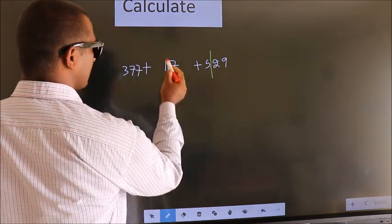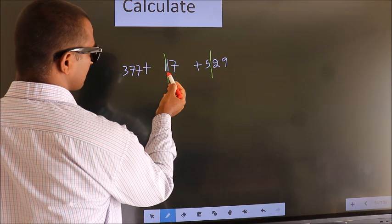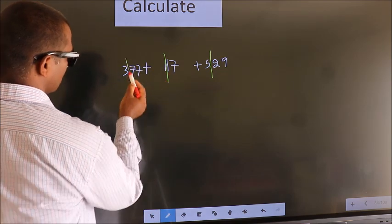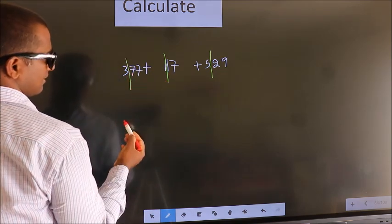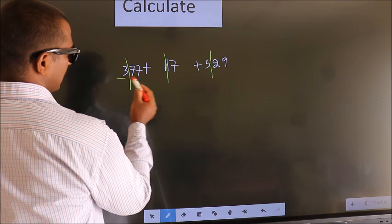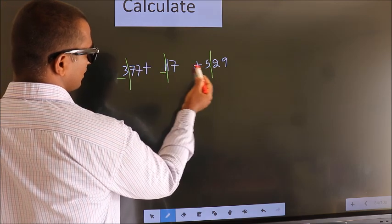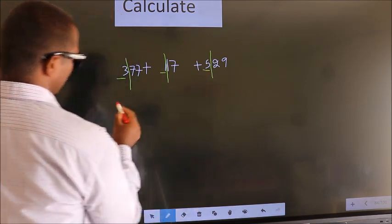These two numbers one pair. These two numbers one pair. These two numbers one pair. Next, 3 plus 1, 4 plus 5, 9.